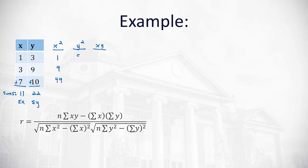Squaring the y's, we get 9, 81, and 100. And multiplying x times y, we get 3, 27, and 70.